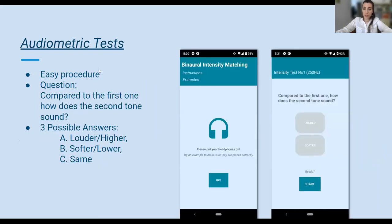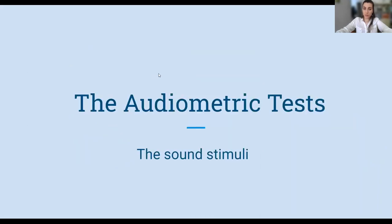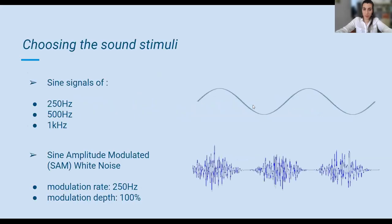The test procedure is very easy. The user listens to pairs of sounds, each one played at a different ear, and then answers the question: compared to the first one, how does the second tone sound? The first three tests of each set use sinusoidal tones of 250 Hz, 500 Hz, and 1 kHz.